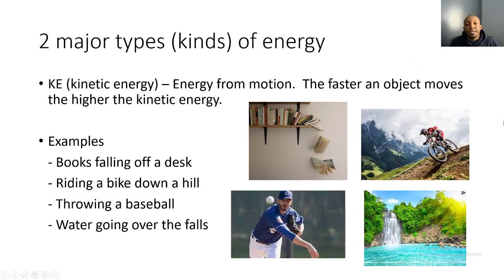Our second major type of energy is kinetic energy — that's energy from motion. The faster an object moves, the higher the kinetic energy. For example, books falling off a wall were sitting still with potential energy, but when they start to fall they have kinetic energy. The longer they fall, the more kinetic energy they have. Similarly, a biker riding down a hill goes faster and faster, accelerating, which gives him more kinetic energy.